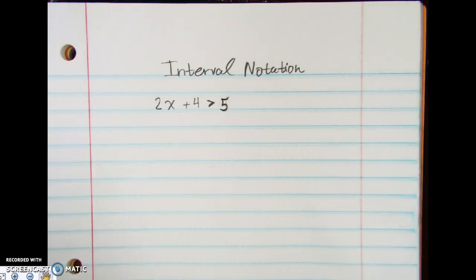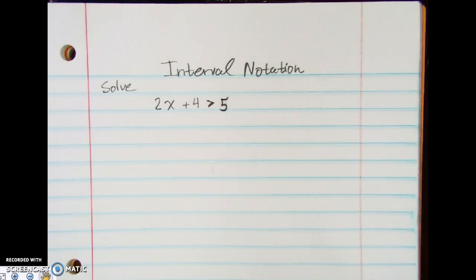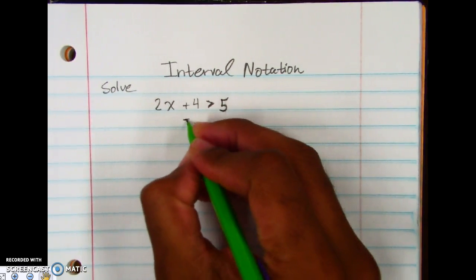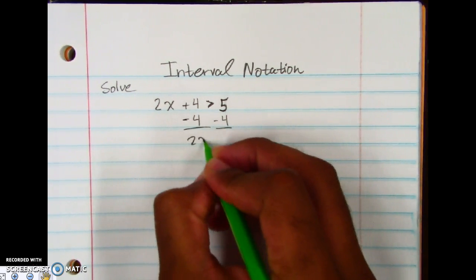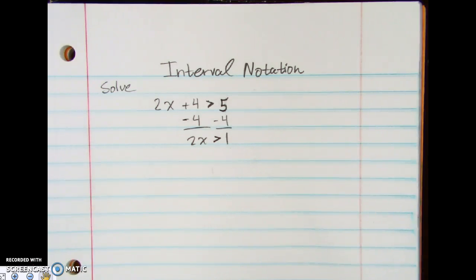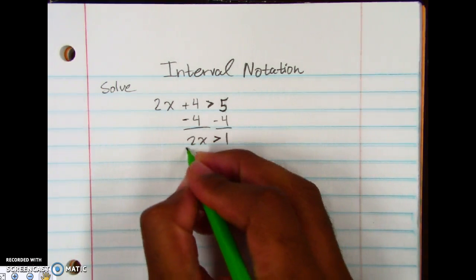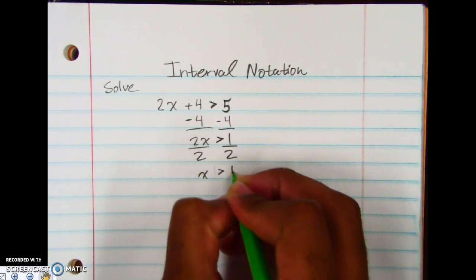And so with that, if we're going to solve this out, solve. When you do that, you know you're going to subtract 4 from both sides. We get 2x is greater than 1. And then next thing we know, we're going to divide by 2. And we get that x is going to be greater than 1 half.